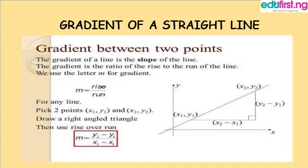So anytime you have two points, you are going to have x1, y1, x2, y2. Now you draw a right angle triangle, then use the rise over run to find your gradient.